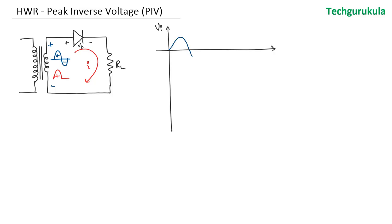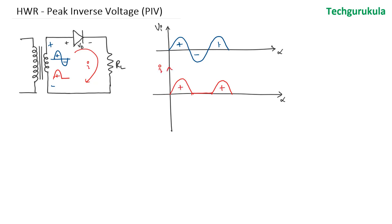Let me take the input voltage graph and correspondingly the current that flows. The current would flow in the first half of the cycle, and in the second half of the cycle it would be zero, meaning only in the positive half cycles the current would be flowing because the diode is conducting. When the diode is conducting, the voltage across the diode would be very small. Assuming the diode is ideal, the voltage across the diode would be zero.